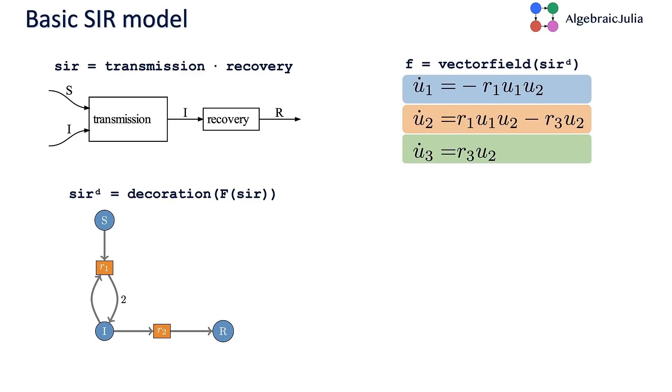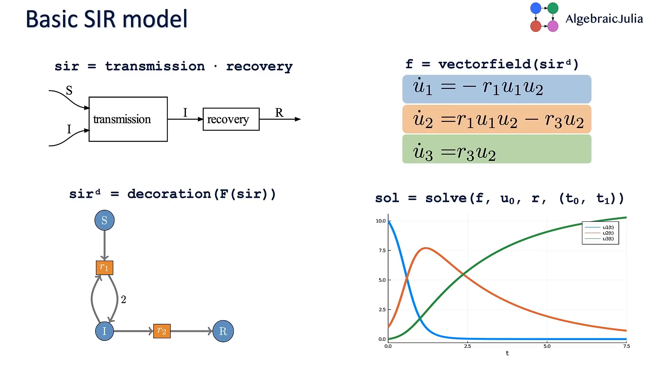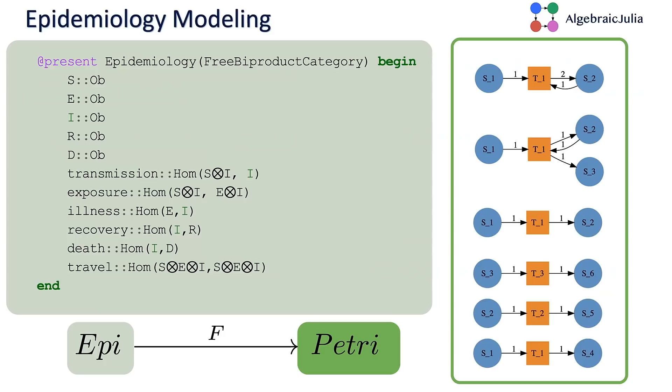This is called the SIR model because there are three states: susceptible, infected, recovered. From that Petri net, you can compute a vector field, which provides you a differential equation in terms of the populations of people or the chemical concentrations. Then from that vector field, you can compute trajectories by solving them using DiffEq.jl. We're going to build increasingly complex models and then apply this pipeline. It's fully automated.